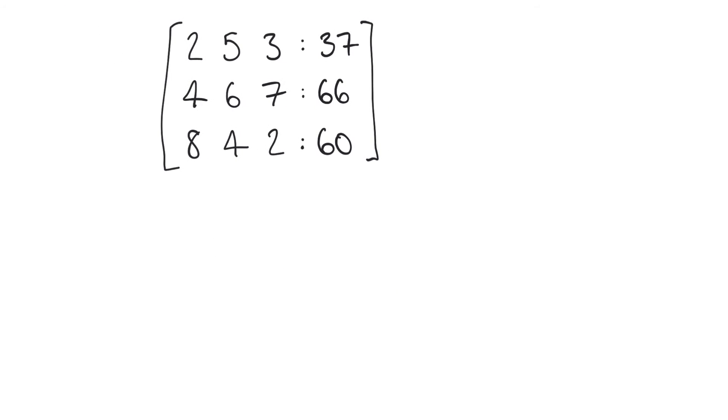But let's have a stab at this and see what we can get. So what I'm going to start by doing is I'm going to start by doubling the second row. So the second row was 4, 6, 7 and 66 and doubling all of those terms we have 8, 12, 14 and 132.